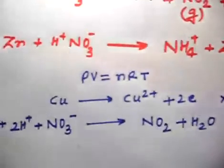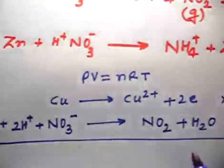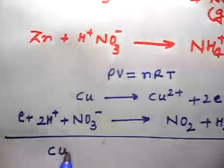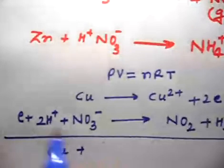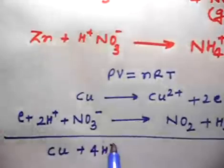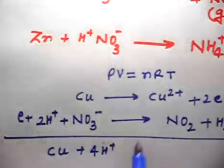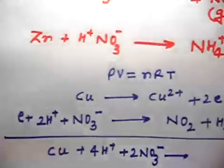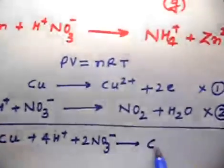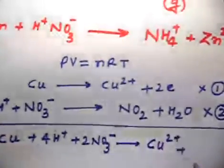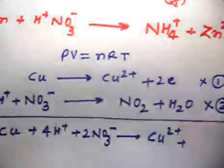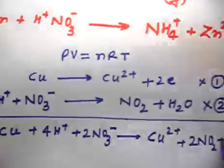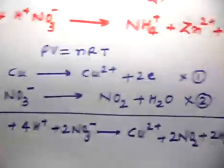Multiplying the NO3⁻/NO2 half-reaction by 2 and adding both half-reactions, the balanced equation becomes: Cu + 4H⁺ + 2NO3⁻ → Cu²⁺ + 2NO2 + 2H2O. This is the balanced equation for copper reacting with HNO3.